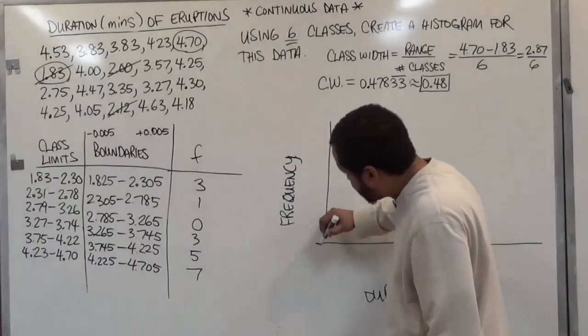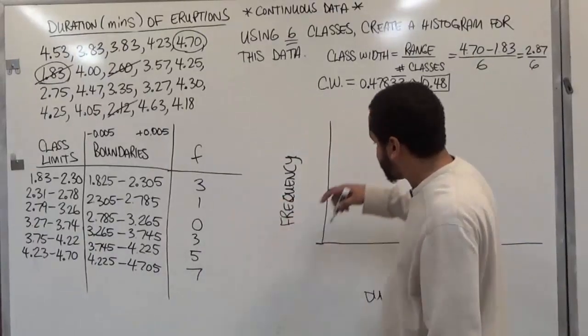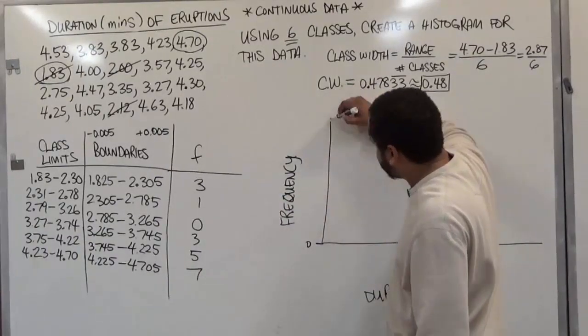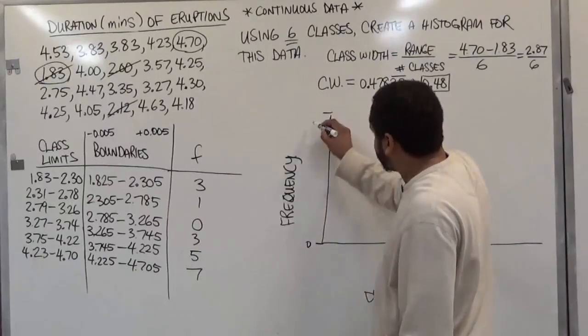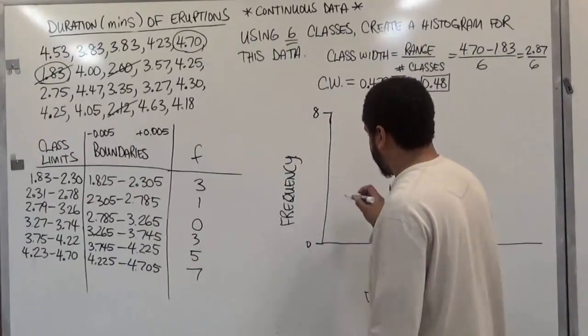So our frequencies will go from the smallest to the highest plus 1. So here we start at 0. We're going to go up to 8 just to make sure it covers all the ground.